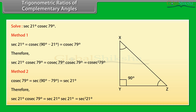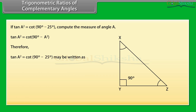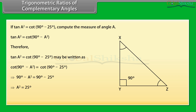Let us attempt one more question. If tan A² equals cosec(90° − 25°), compute the measure of angle A. Since tan A² equals cosec(90° − A²), the equation tan A² equals cosec(90° − 25°) may be written as cosec(90° − A²) equals cosec(90° − 25°). This implies that 90° minus A² equals 90° minus 25°. Therefore, A² equals 25°, and A equals 5°.